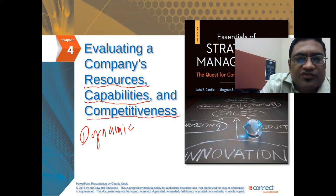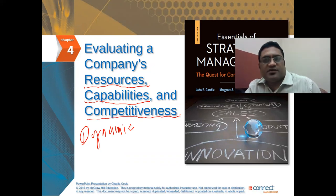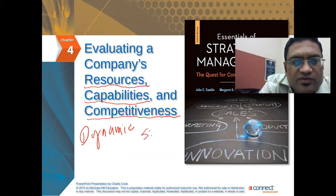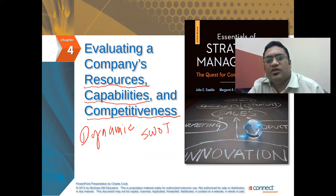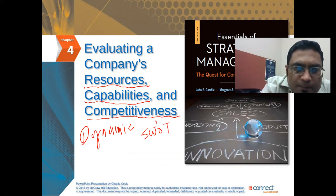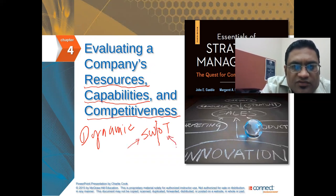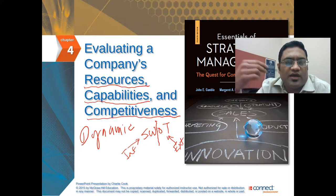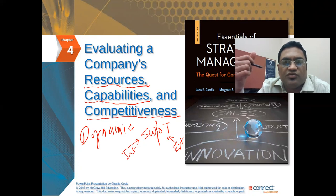The next item is competitiveness — how do we find out if the company is competitive? Before we do that, we need to do a SWOT analysis, meaning you look at the company's strengths, weaknesses, opportunities, and threats. Strengths and weaknesses are internal to the company; opportunities and threats are external. That's how you come up with your SWOT analysis, and then you find out whether your capabilities are giving you a competitive advantage.